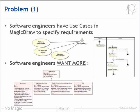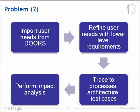Typically in Doors, Polarian, or PTC Integrity. But they want to have the textual representation of these requirements in the form displayed at the bottom of the slide. Typically engineers have user needs stored in a requirements management tool such as Doors, then want to be able to import these user needs into the model and refine them into functional and non-functional requirements. After that, users want to be able to trace from these new requirements to the architectural elements and test cases.